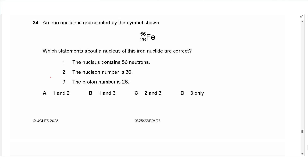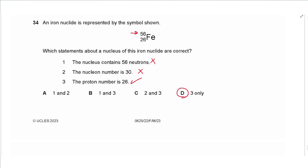Question 34: an iron nuclide is represented as Fe-56-26. The nucleus does not contain 56 neutrons — it contains 56 nucleons total. The nucleon number is 56, not 30. The proton number is 26, which is correct. Only statement 3 is correct.